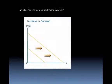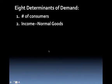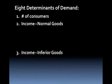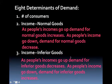The next determinant is income — normal goods. A normal good is one where as your income goes up, demand for it increases. You may see this referred to as a luxury good. Income inferior goods have the opposite effect: as your income goes down, demand for inferior products goes up, and as your income goes up, demand for those inferior products goes down. An example of a normal good would be name-brand refried beans, while a generic store brand would be considered an inferior good.